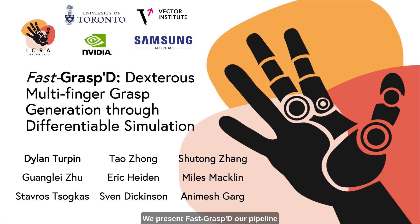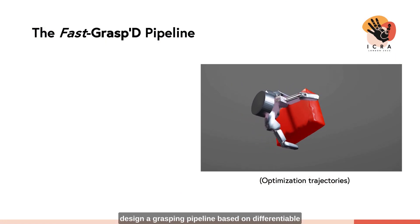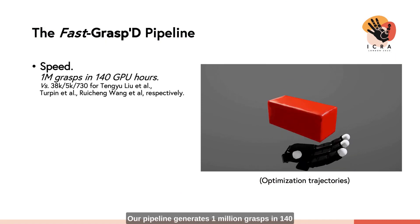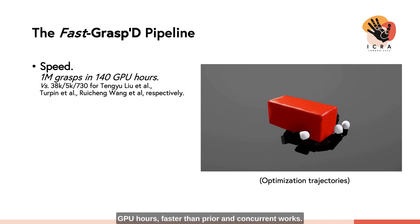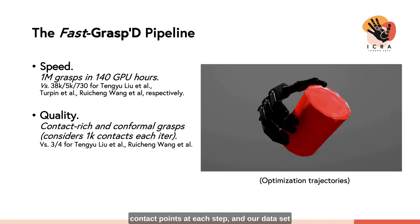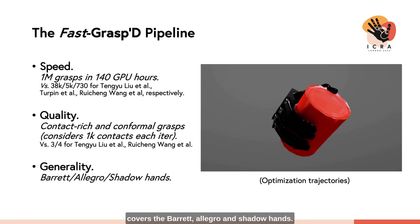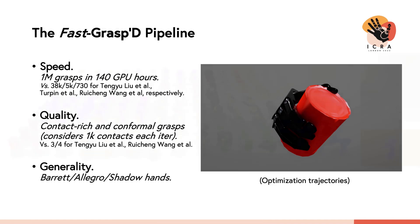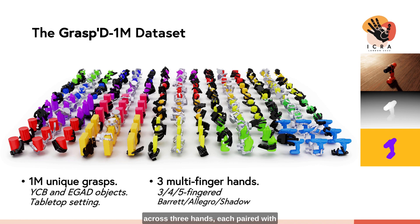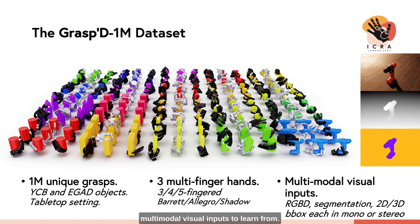We present FastGrasp, our pipeline for scaling contact-rich robotic grasp synthesis, and the resulting dataset Grasp-1M. Our goal is to design a grasping pipeline based on differentiable simulation with speed, quality, and generality. Our pipeline generates 1 million grasps in 140 GPU hours, faster than prior and concurrent works. We use this pipeline to generate the Grasp-1M dataset, containing 1 million unique grasps across three hands, each paired with multimodal visual inputs to learn from.